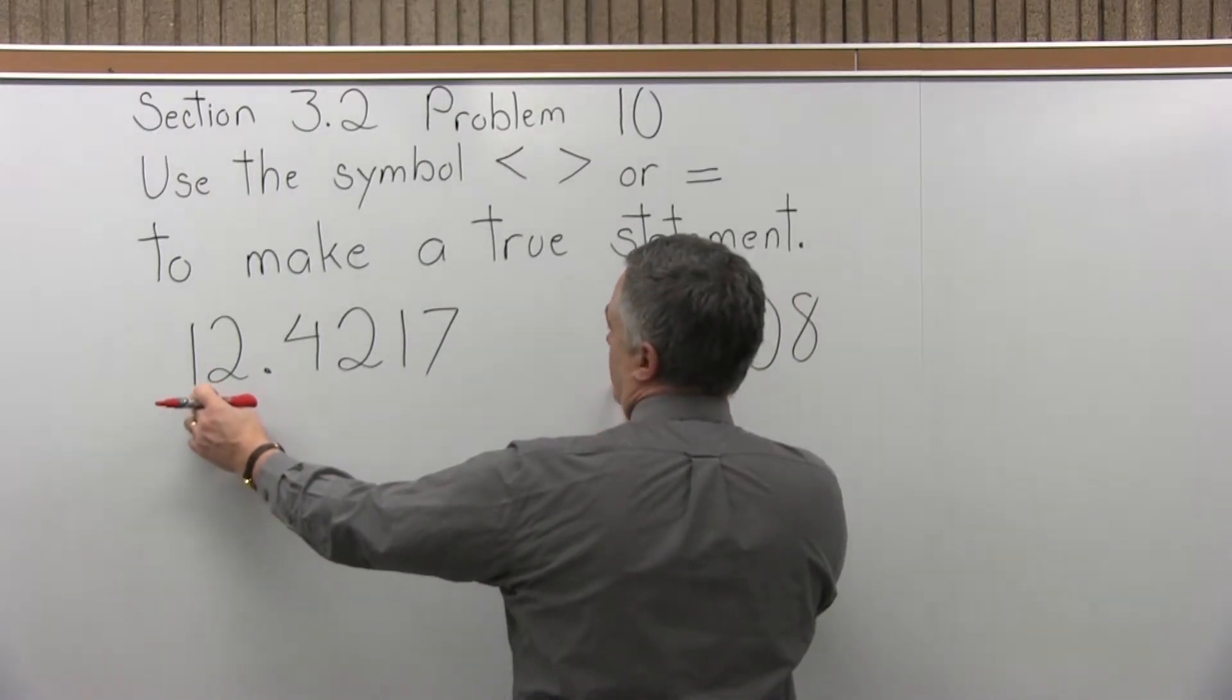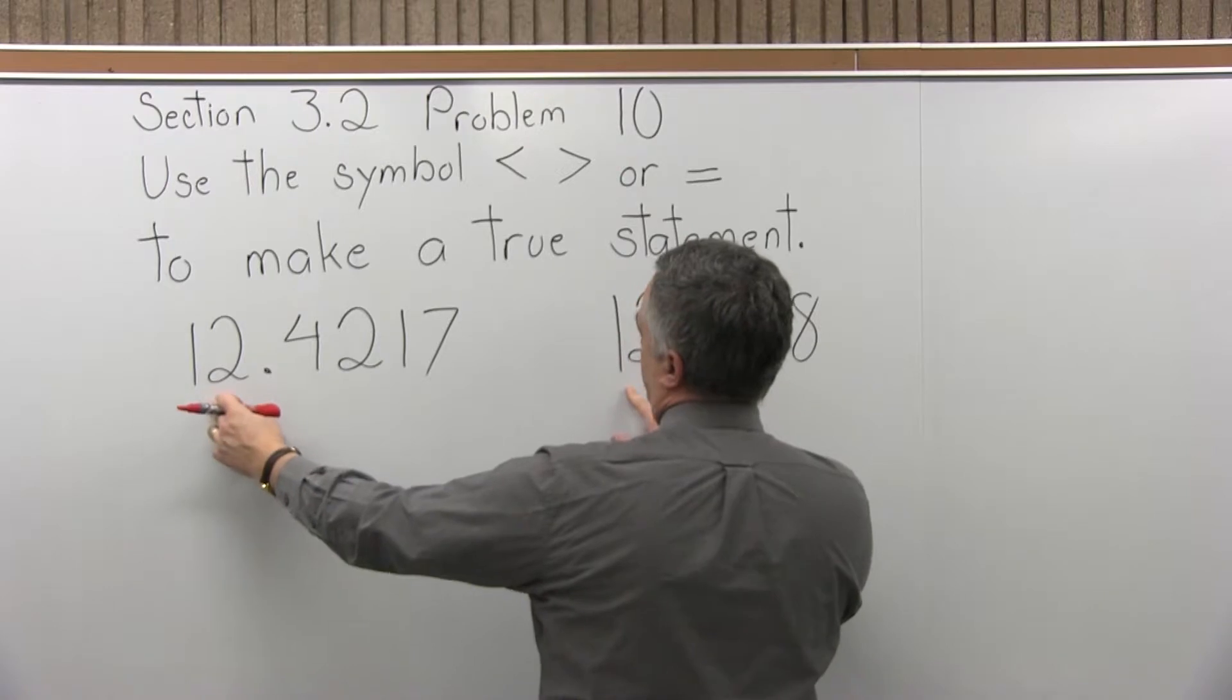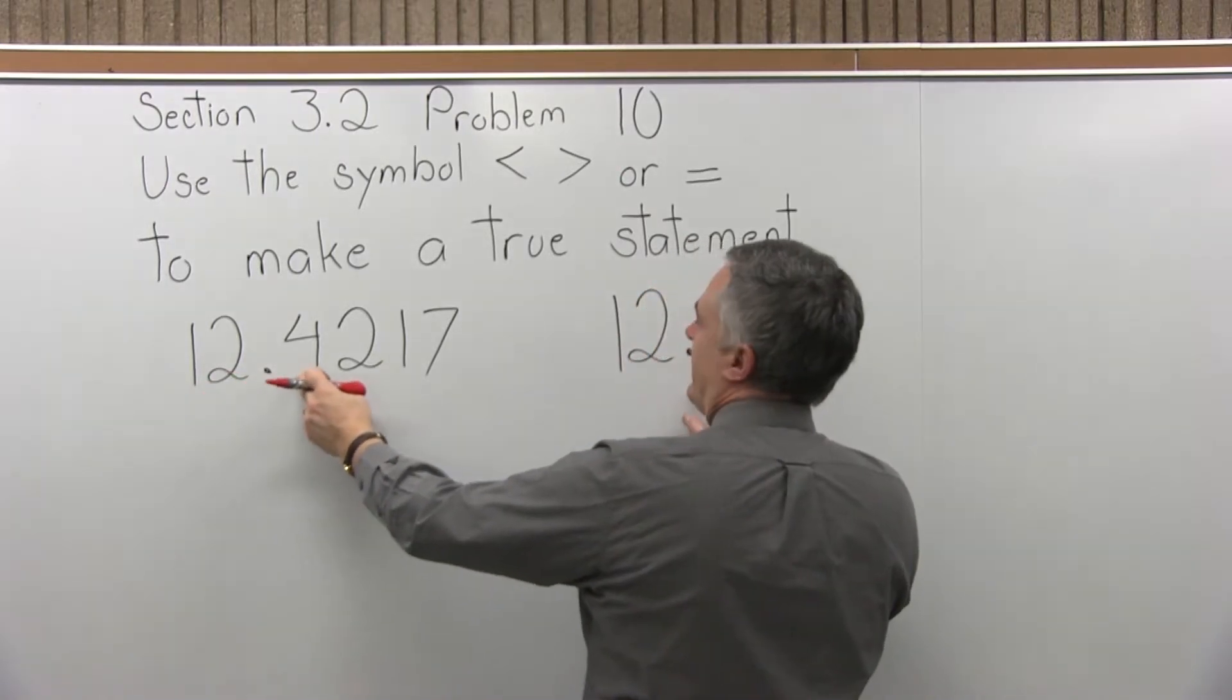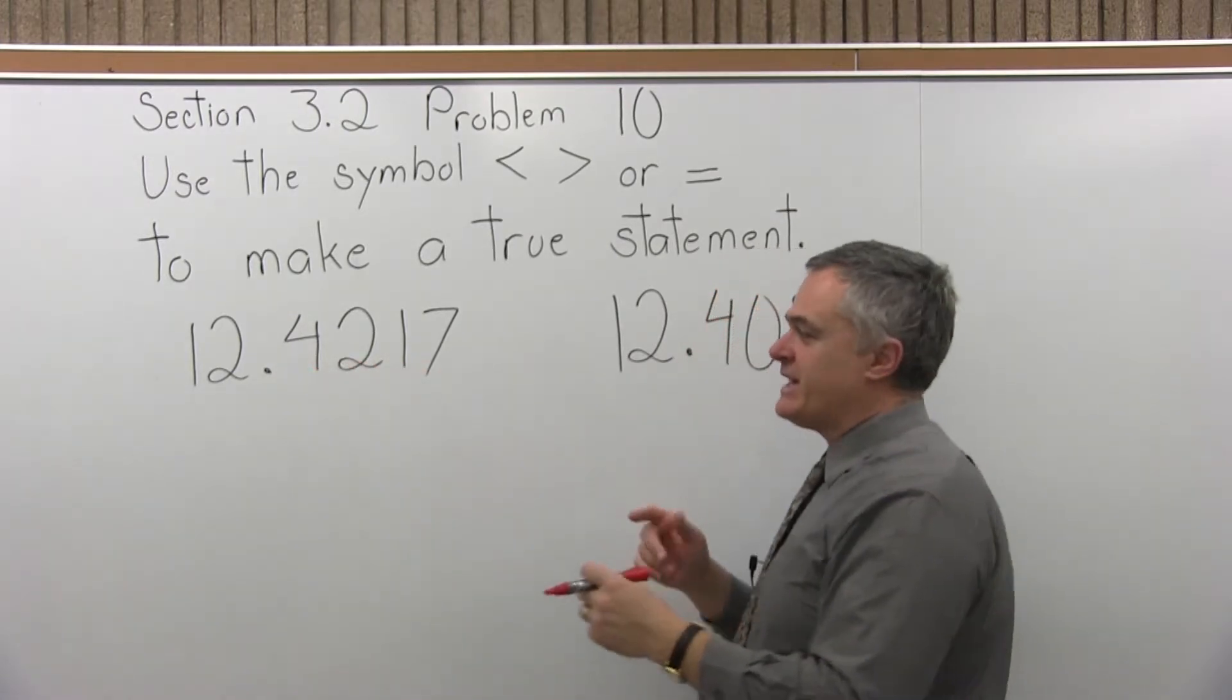All the way to the left, they both have a digit of one. That's a tie. Go over one digit to the right. They both have a digit of two. That's a tie. Keep going. Next one, they both have a digit of four. That's still a tie. Keep going.